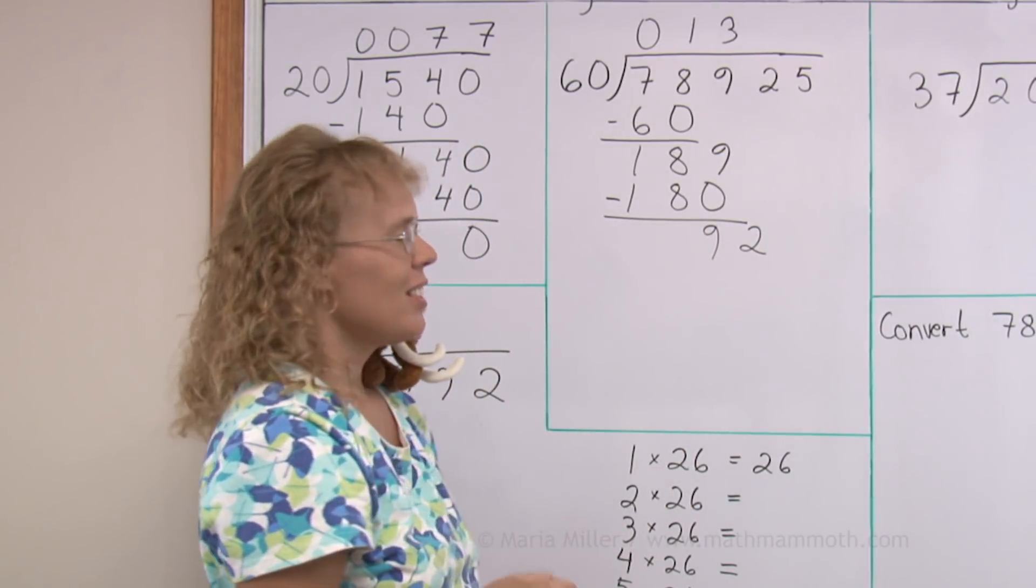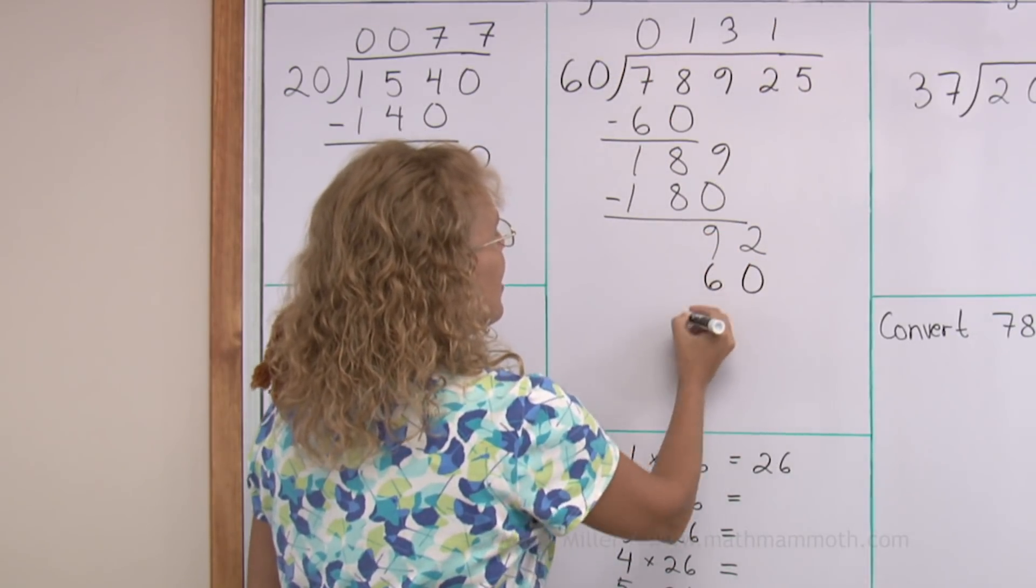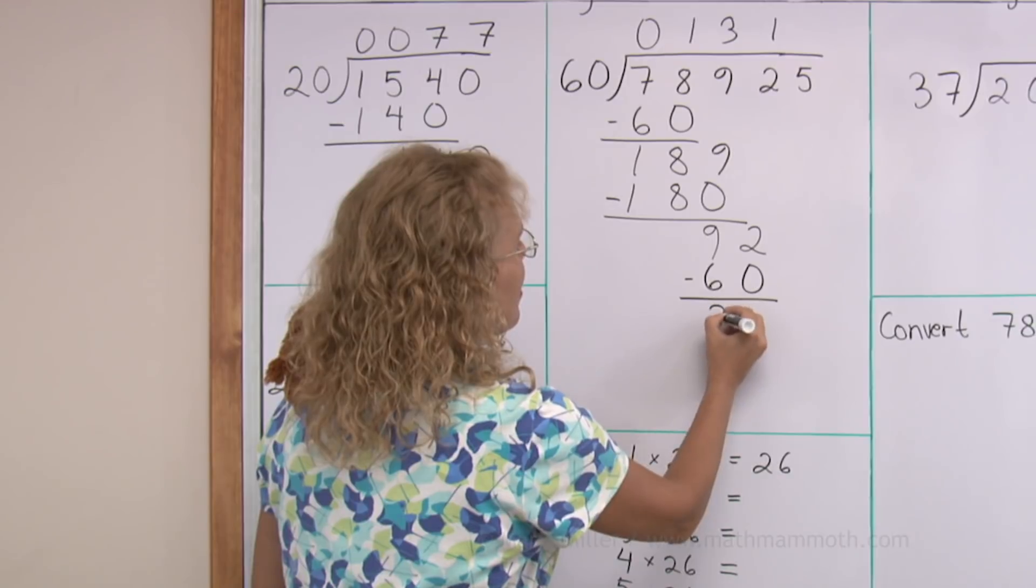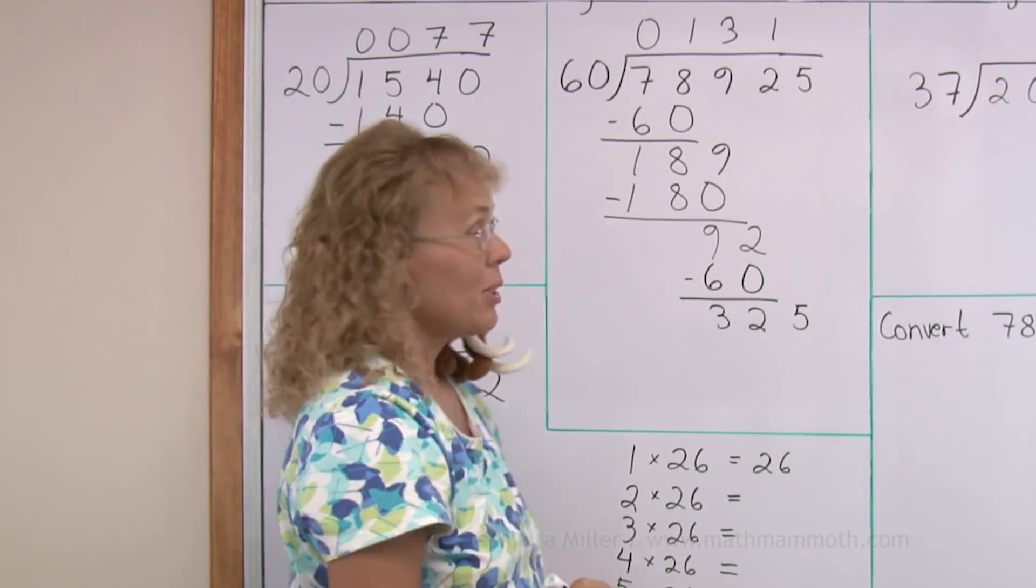Okay, 92. That's easy again because it goes only once. 1 times 60. And subtract. We get 32 here. Drop down that last digit. And then 325.